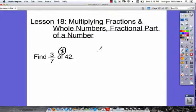So we've got our multiplication symbol here. What we're going to do is we're going to say 3 7ths times 42 over 1. And that will tell us, it will help us find what 3 7ths of 42 is.